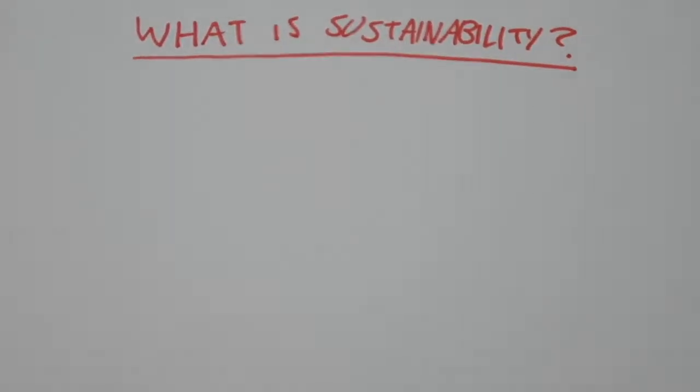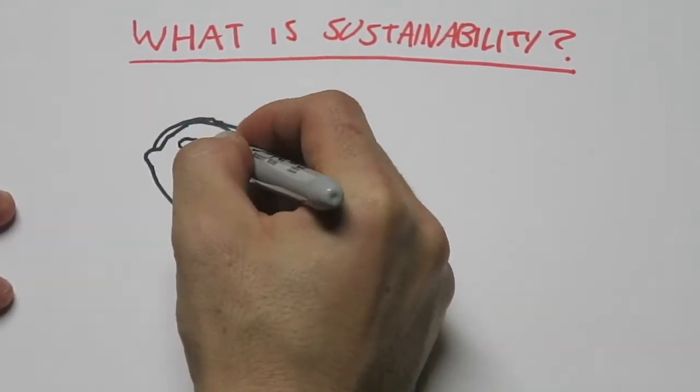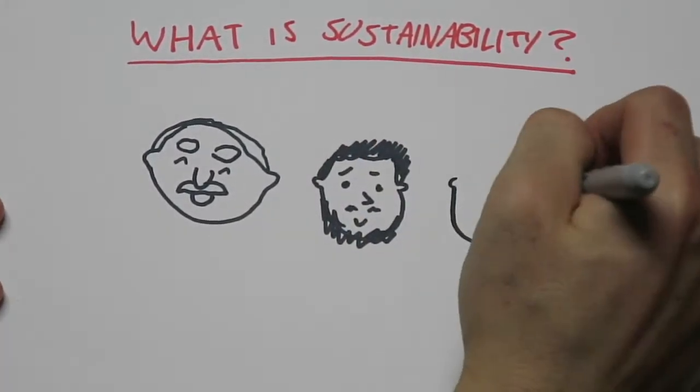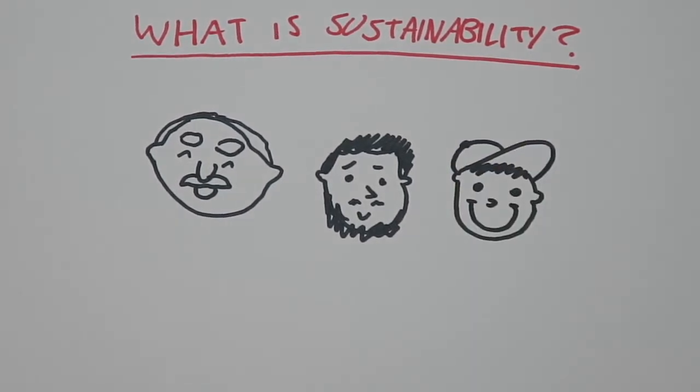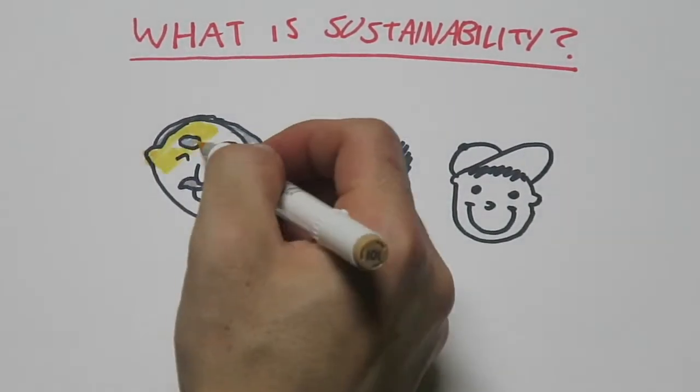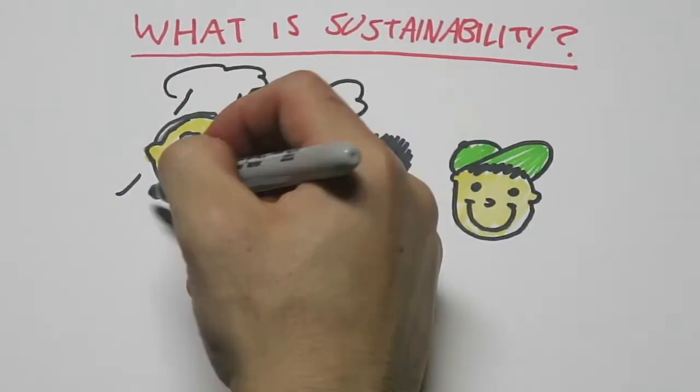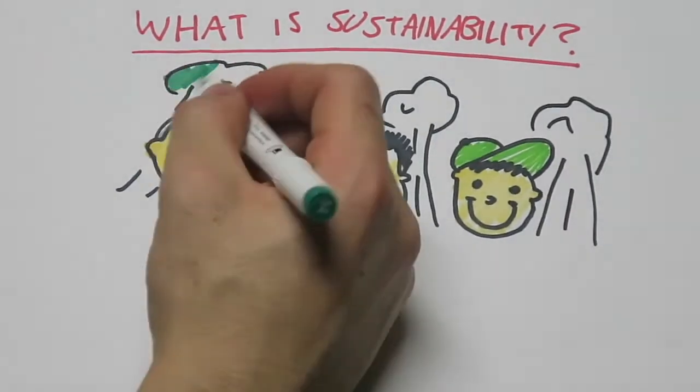The concept of sustainability defined by the United Nations is the ability to meet the needs of the present without compromising the ability of future generations to meet their own needs. This means to interact with the environment in a way that avoids depletion or degradation of natural resources and allows for long-term environmental quality.